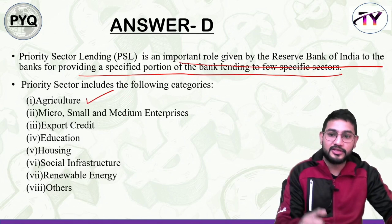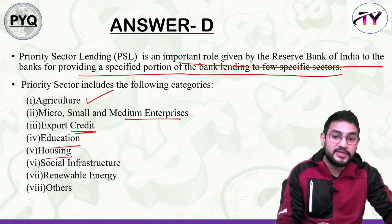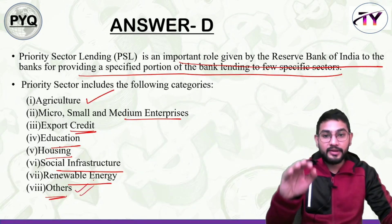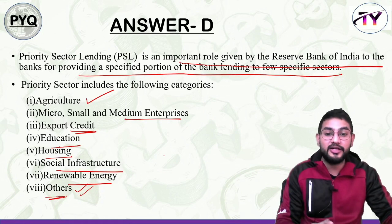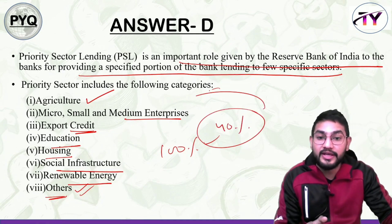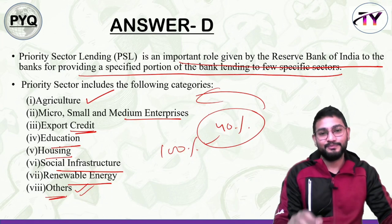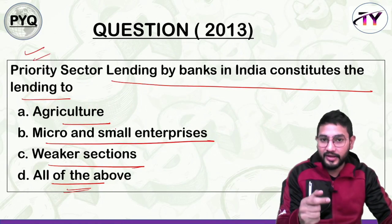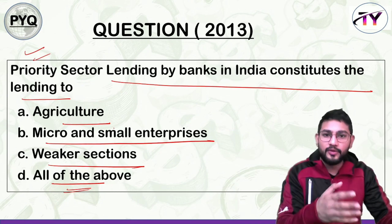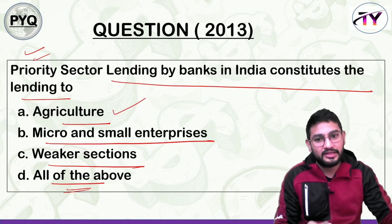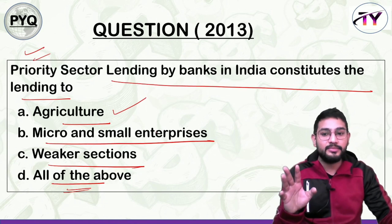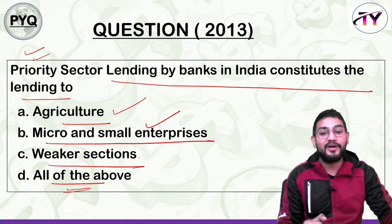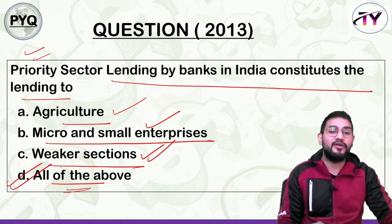Priority sector lending includes: agriculture, small and large farmers, MSME, export credit, education, housing, social infrastructure, renewable energy, and others. If new categories need to be added in the future, they go into 'others'. All banks have the obligation to direct 40% of their total loans to these categories. So the answer to this question is D — all of the above: agriculture, MSME, and weaker sections.